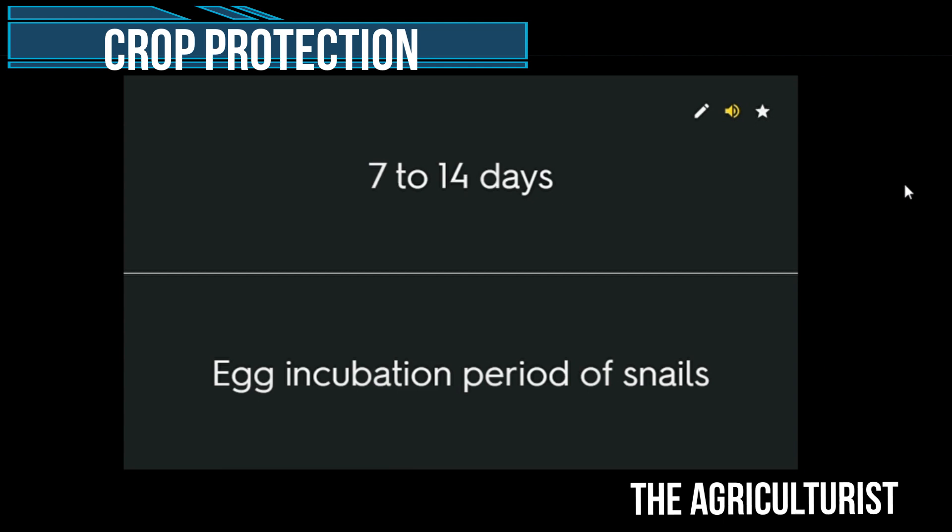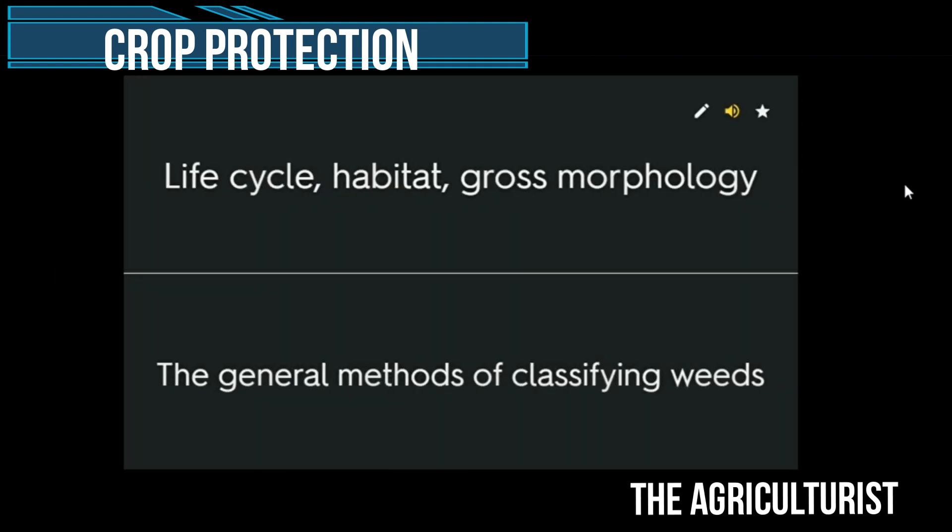7 to 14 days — egg incubation period of snails. Life cycle, habitat, gross morphology — the general methods of classifying weeds.